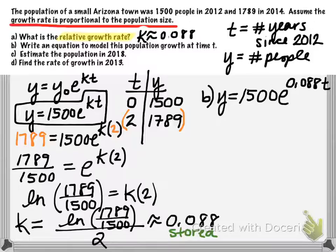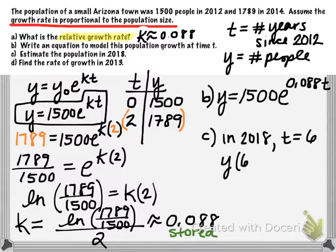So part C says estimate the population in 2018. So in the year 2018, T will be equal to 6. So essentially, you're just needing to find Y of 6.